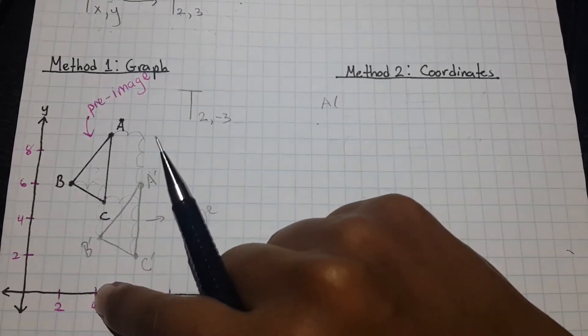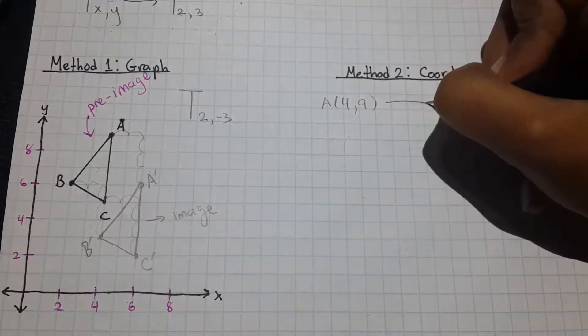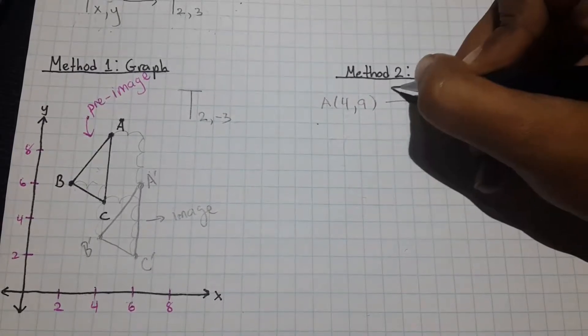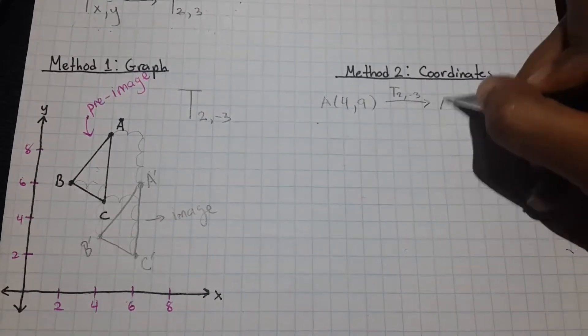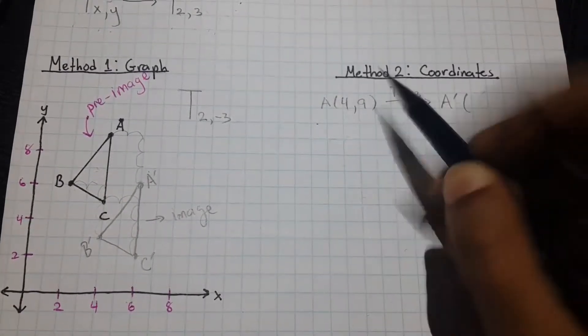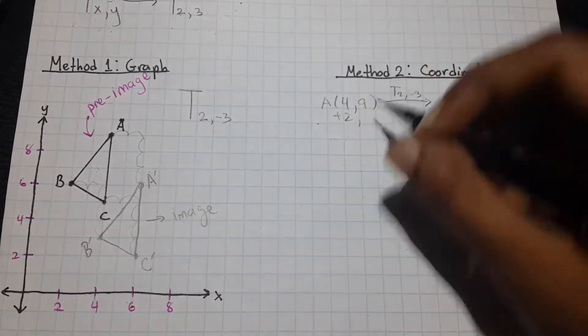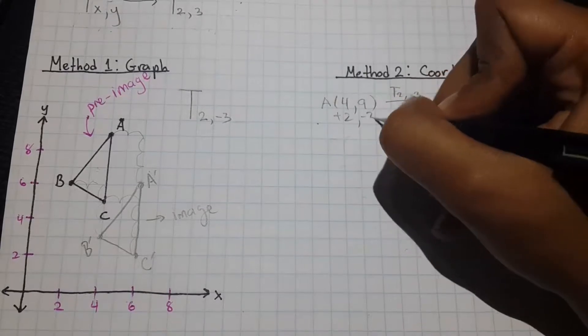So, let's start off with point A. Point A is (4,9). And we have to perform a translation of two units to the right and three units down to get A prime. So, what we do here is we add four with two, so plus two here, and we subtract nine by three, so minus three here.